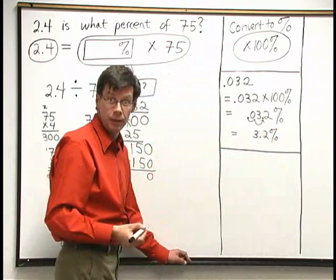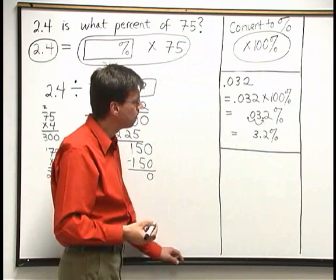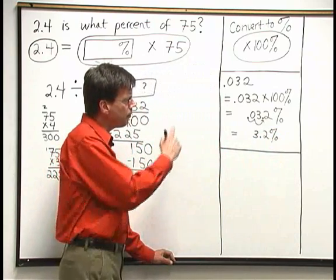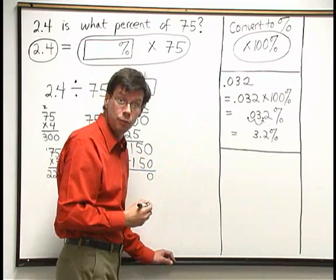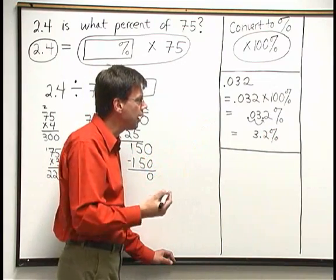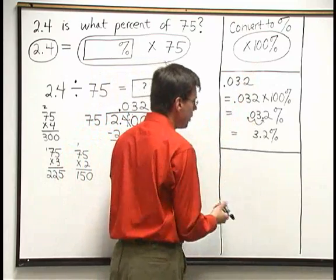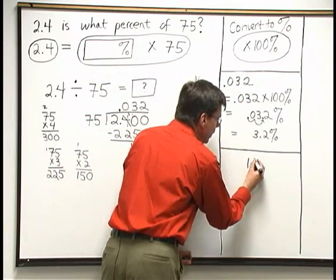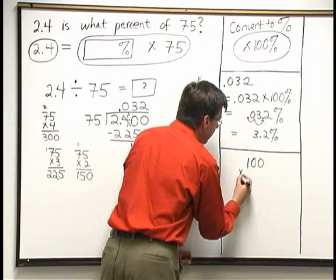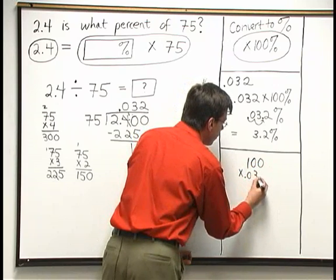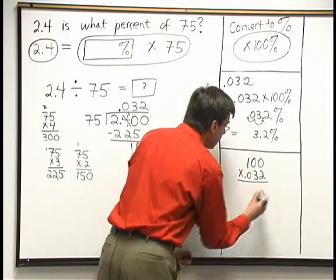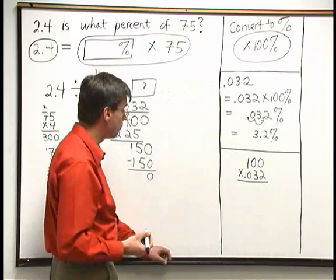If you don't remember how many spaces to move the decimal point or you're not sure which way to go, you can also multiply by 100 the long way where you take 100 times 0.032 and go through the long multiplication process.